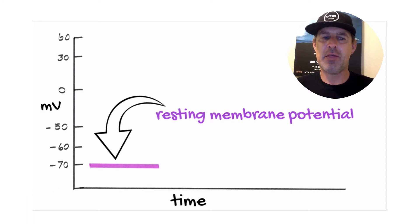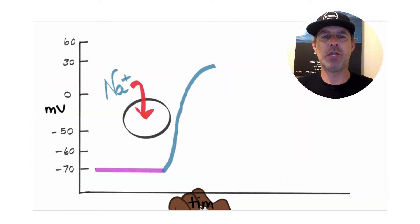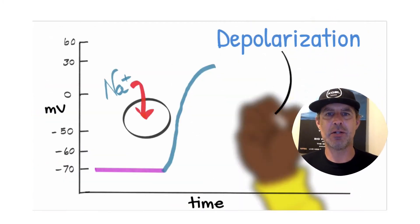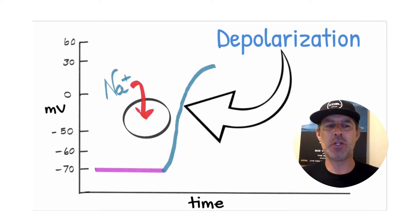So that change, more often than not, is due to the influx of sodium into that cell. And that change is what's known as a depolarization. I should say, when a cell becomes more positive inside than its resting state, that's a depolarization.